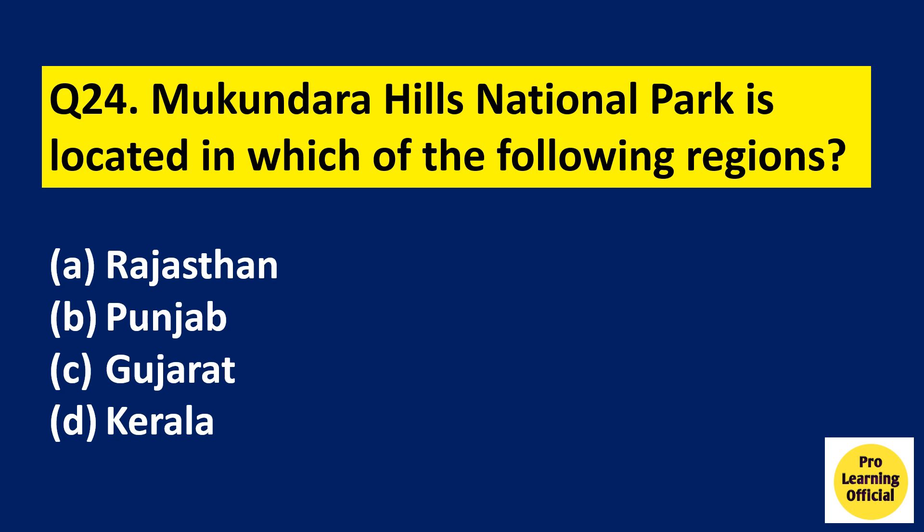Question number 24: Mukundara Hills National Park is located in which of the following regions? Options: Rajasthan, Punjab, Gujarat, Kerala. The right answer is Option A, Rajasthan.